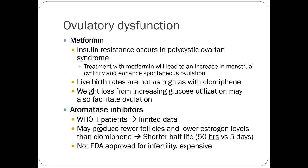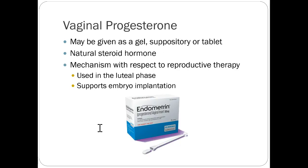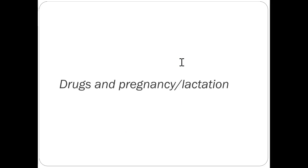Aromatase inhibitors can be used in this area too. Vaginal progesterone can be given as a gel, suppository, or tablets — it's a natural steroid hormone. Its mechanism is to enhance the luteal phase to support embryo implantation, working locally with very little systemic absorption. That's really all I want to talk about with fertility.